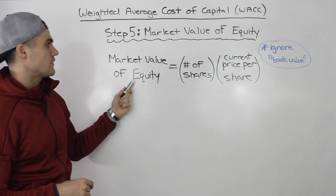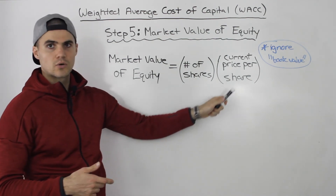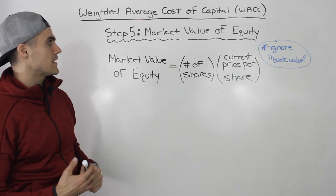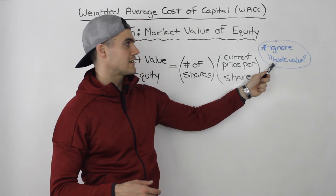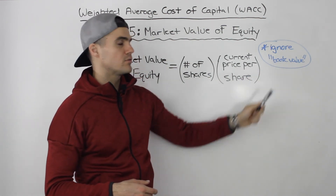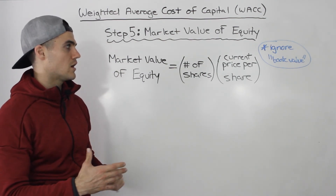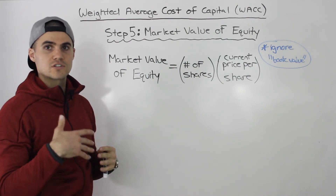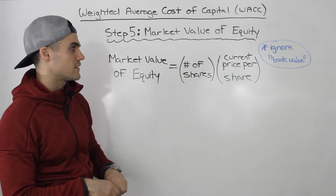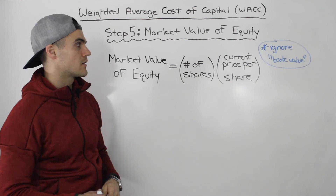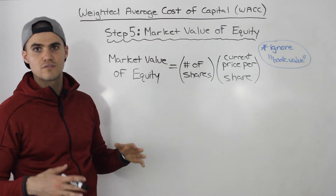Basically, the market value of equity is the number of shares that a company has times the current price per share. With the market value of equity, you want to ignore anything that says book value — just ignore that, because book value represents the value of the equity when it was first issued. We don't care about the value when it was issued; we care about the value today, the current price per share.